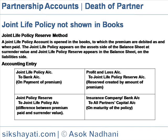Joint Life Policy — Reserve Method: A Joint Life Policy account is opened in the books, to which premiums are debited as and when paid. At the end of the year, an amount equal to the annual premium is debited to the profit and loss appropriation account and credited to the Joint Life Policy Reserve Account. The book value of the policy is adjusted to its surrender value by a transfer from the Joint Life Policy Reserve account. The Joint Life Policy appears on the asset side of the balance sheet at surrender value, and the Joint Life Policy Reserve appears on the liabilities side.